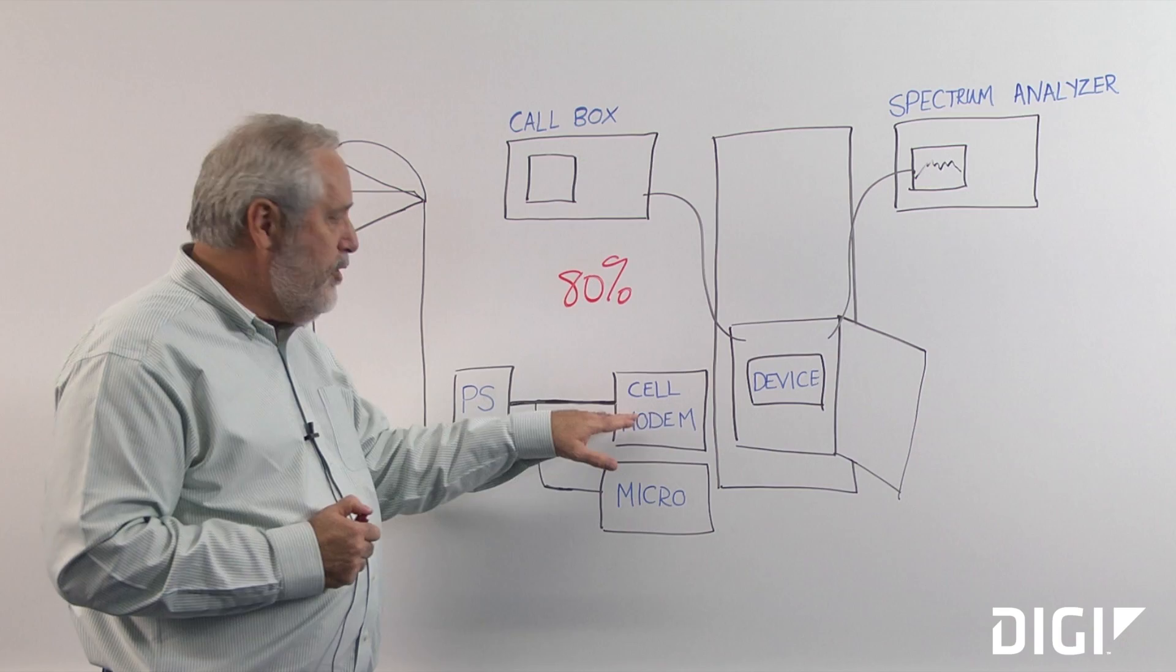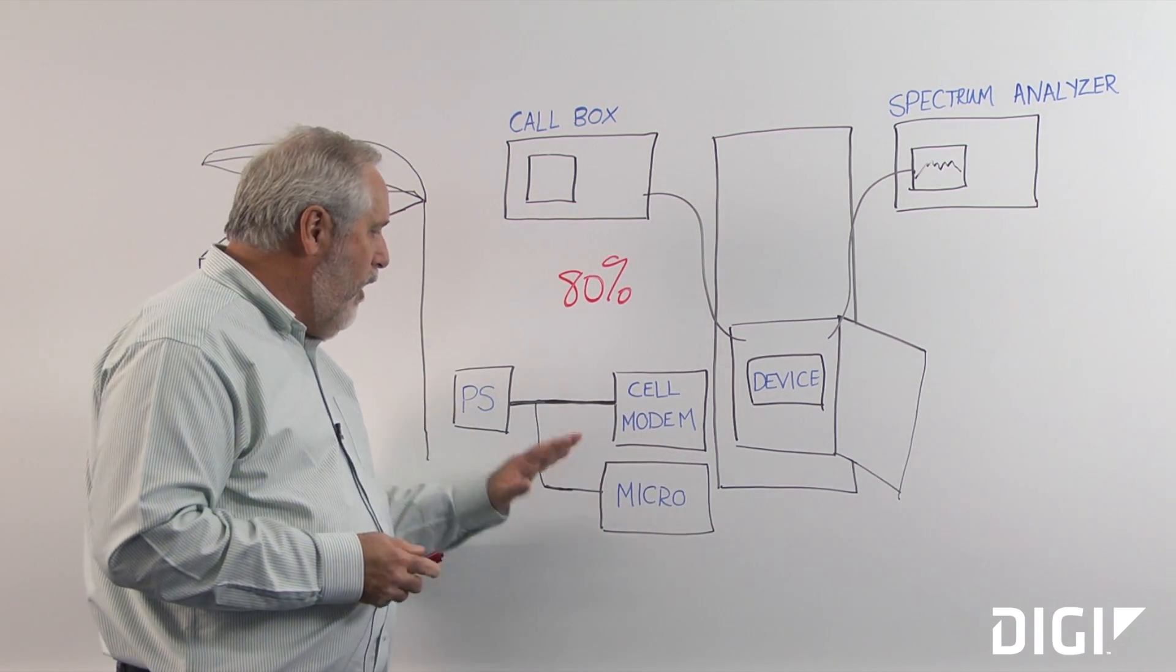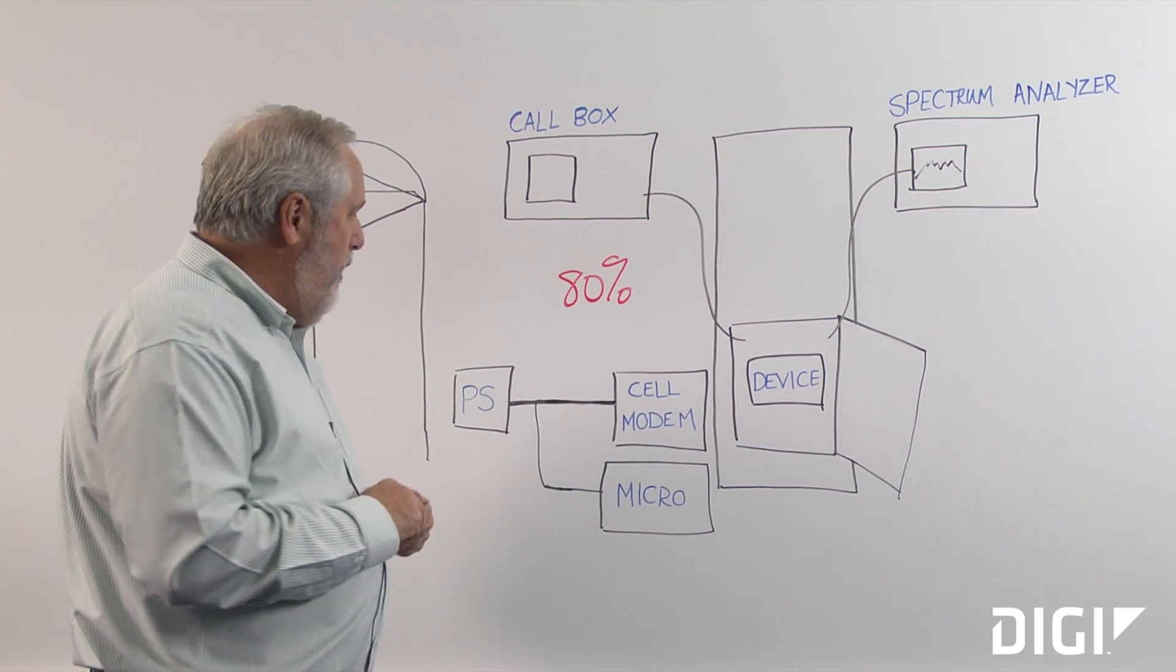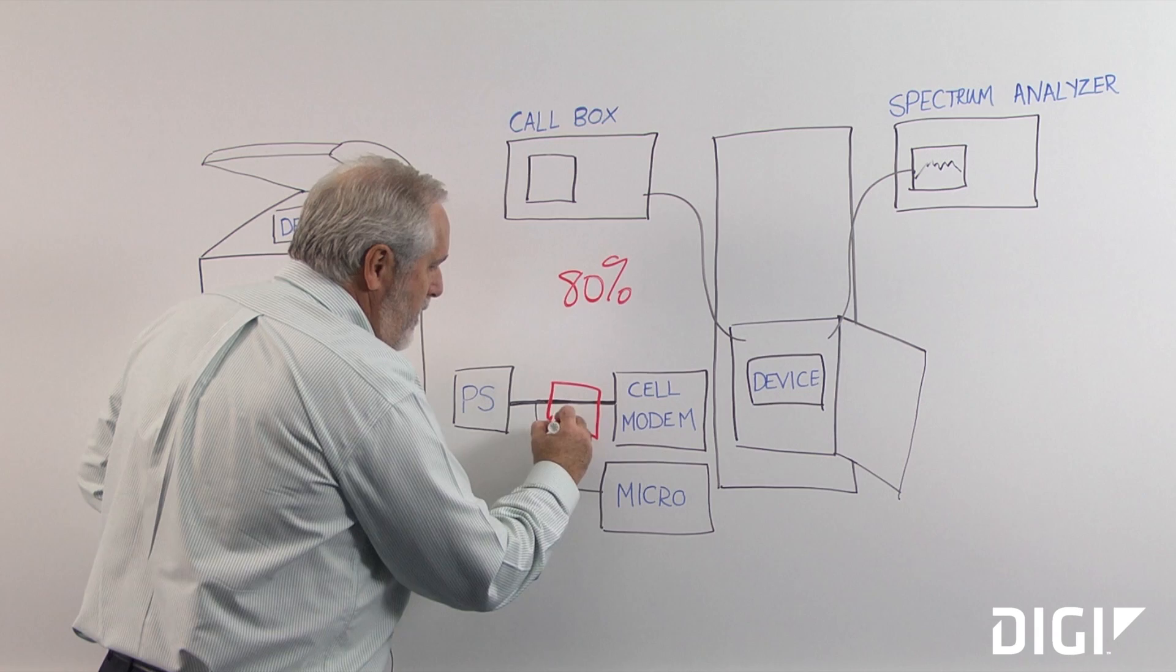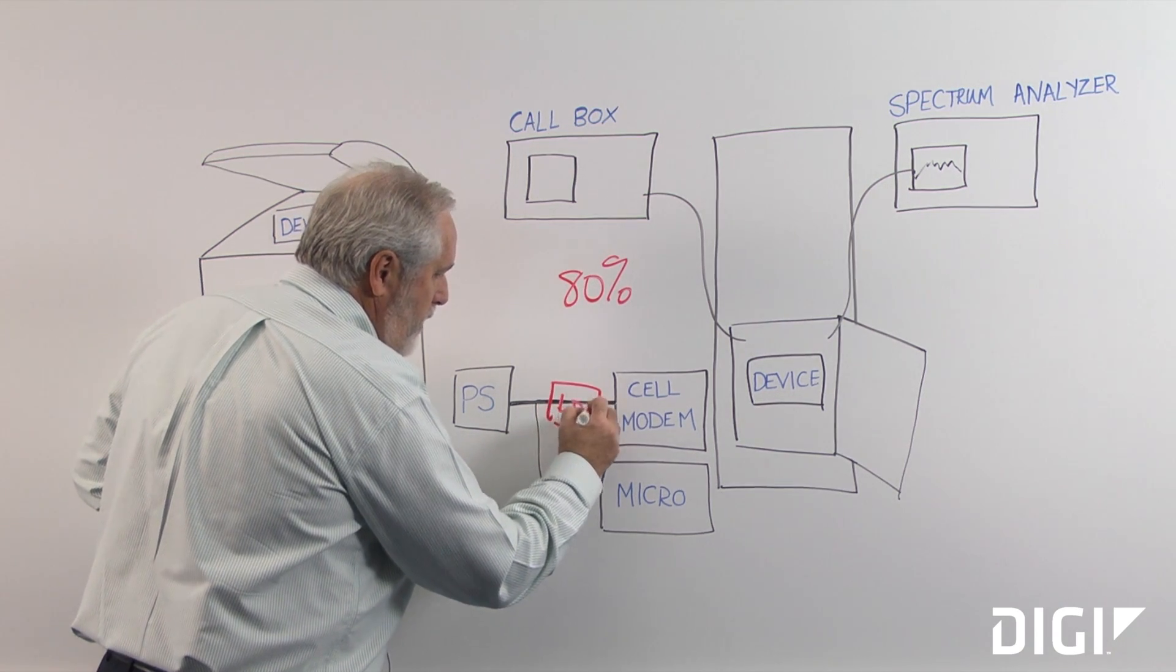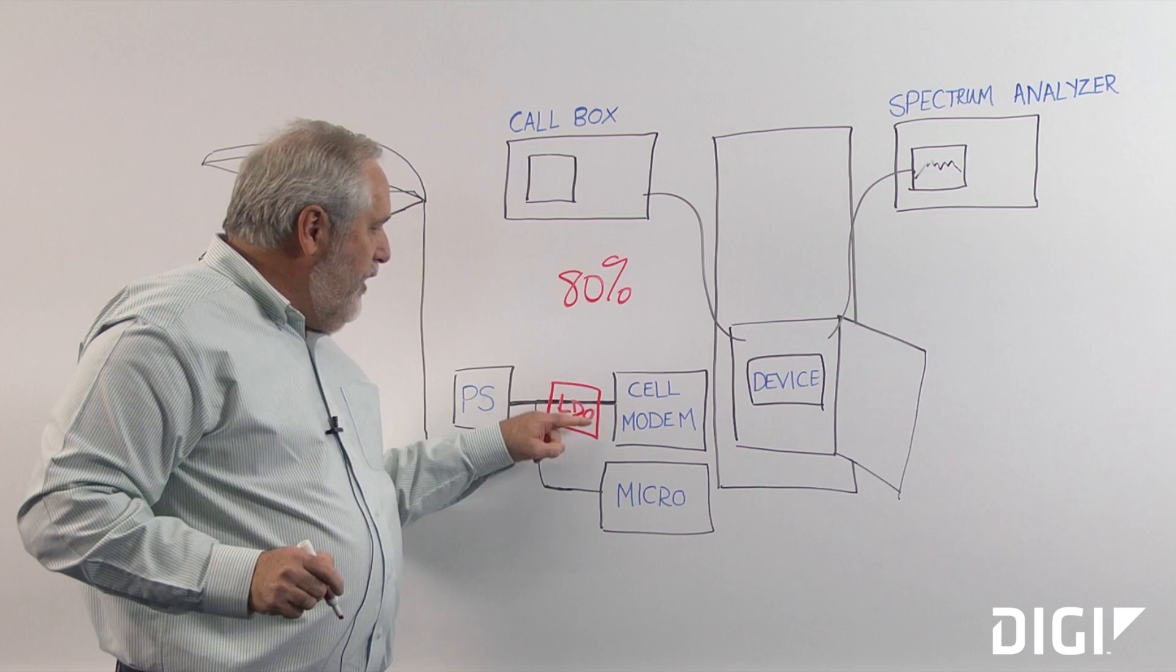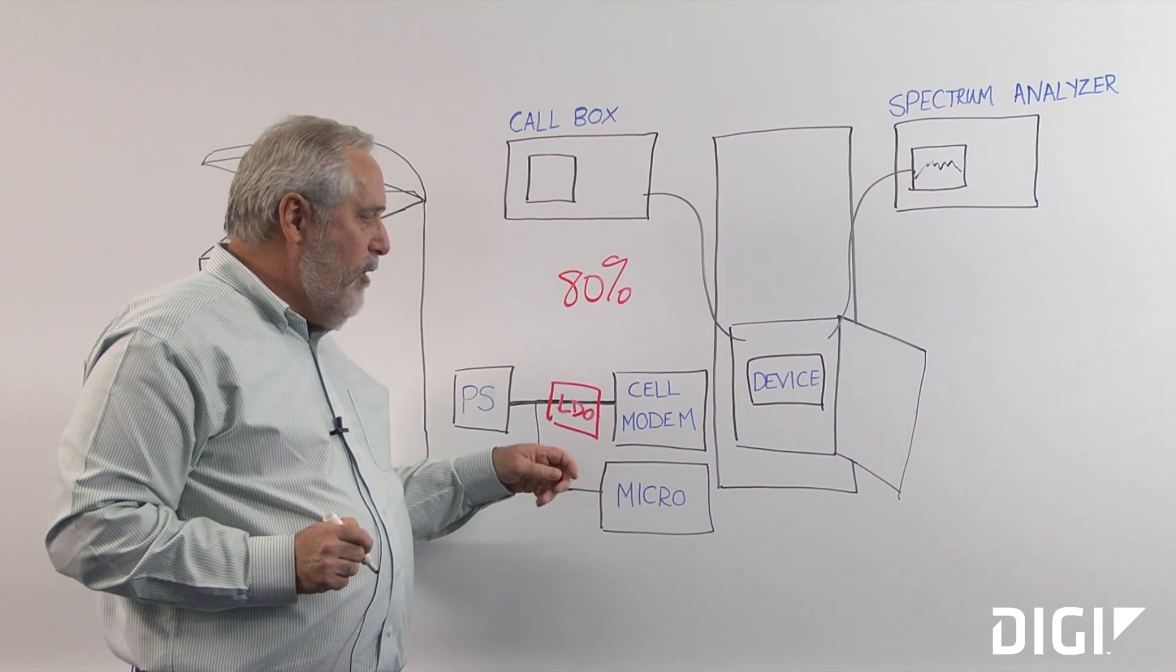The micro and all those kinds of things. One of the improvements that we were able to tell them is that what we wanted to do is add in an LDO, a low dropout linear regulator, that would then filter that noise coming from the power supply over the cell modem.